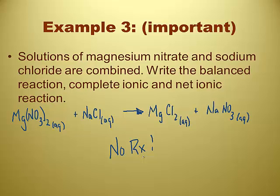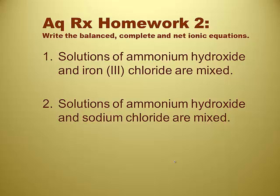All you've got at the end is still a solution that just looks like water. So all you do here is predict your products — don't forget to balance, putting a two and another two — and you just write no reaction. For homework, write a balanced molecular equation, a complete ionic equation, and a net ionic equation for each of two problems. Unless one is no reaction, then you only write the first one. See you next time.